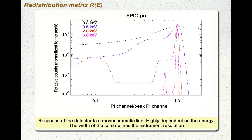The reason we use the forward folding approach is that the CCD redistribution matrices — or those of EPIC, NuSTAR, and NICER instruments — are very broad, which prevents the spectral equation from being invertible.